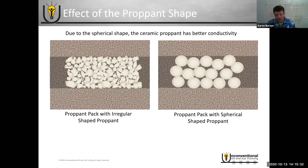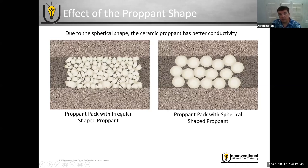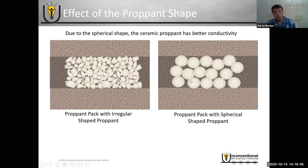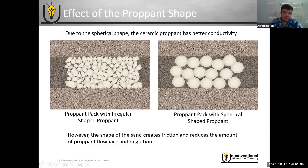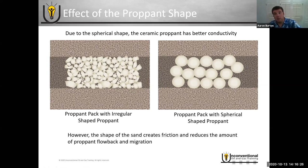This illustrates the irregular versus spherical shape with natural sands and ceramics. Because of the irregular shape, sand just fits into itself however it falls, which theoretically reduces conductivity by reducing the flow path through the proppant pack. The spherical proppant has a lot more pore space and conductivity, but the irregular shape of the sand actually creates friction that helps mitigate proppant migration after the frac job. The smooth spherical shape, as pressure cycles, can act like ball bearings and increase the chances of proppant flowback and migration.